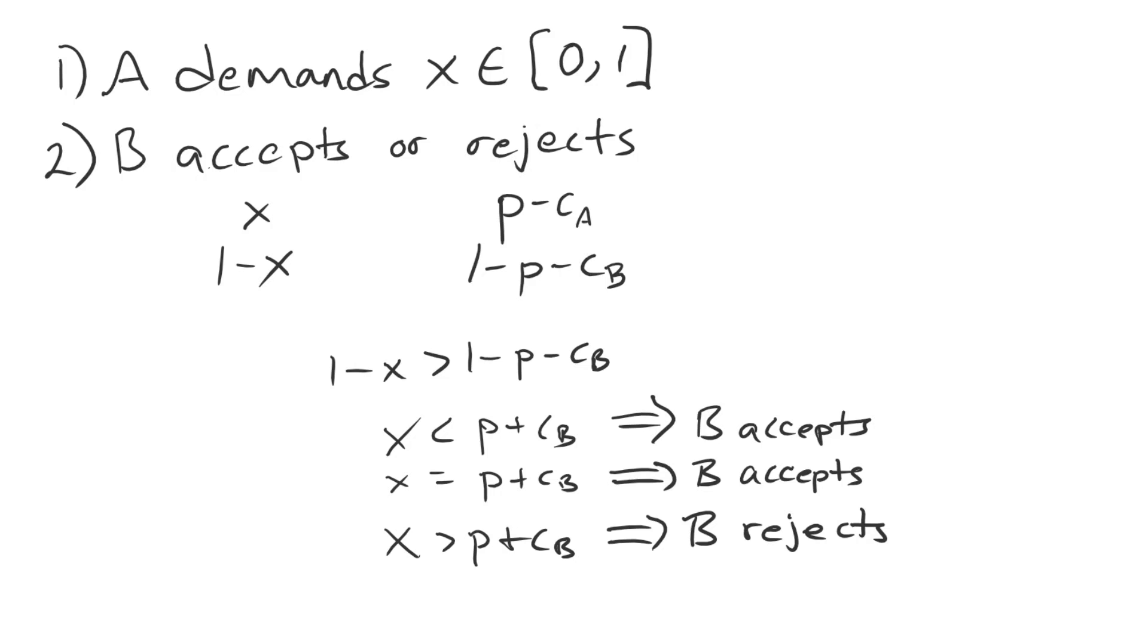Welcome back to Bargaining and War. This is a technical lecture on why there is a unique equilibrium to the ultimatum game. To recap from last time, the ultimatum game featured A making a demand X between 0 and 1, and B accepting or rejecting.